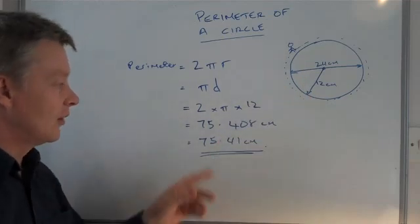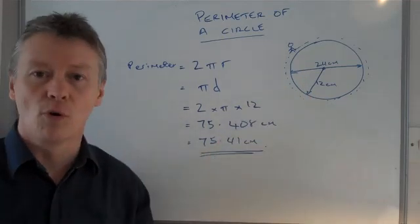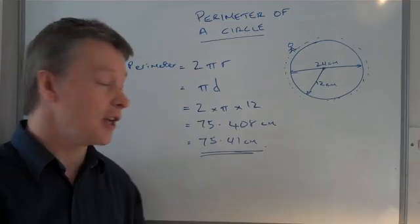And on this particular circle, it's 75.41 centimeters to 2 decimal places.